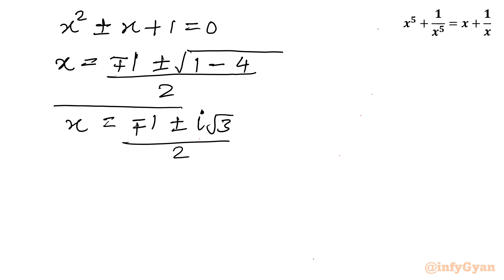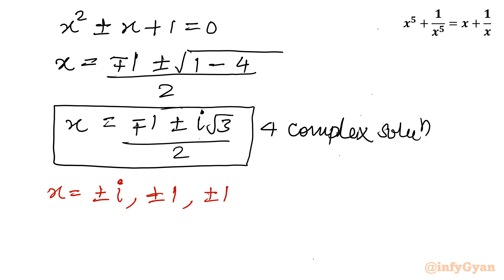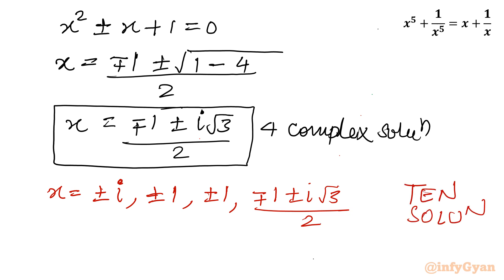In total there are 10 solutions overall. From x power 4 minus 1 equal to 0 we got x equal to plus minus i and plus minus 1. From x power 6 minus 1 equal to 0 we got plus minus 1 again, and (minus plus 1 plus minus i root 3) over 2 for four more solutions. So overall there are 4 real solutions and 6 imaginary solutions.